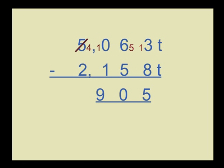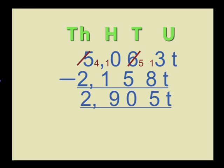10 minus 1 is 9. We write a comma in front of the hundreds place value. Now we subtract the thousands, and 4 minus 2 is 2. The difference between the numbers is 4,905.